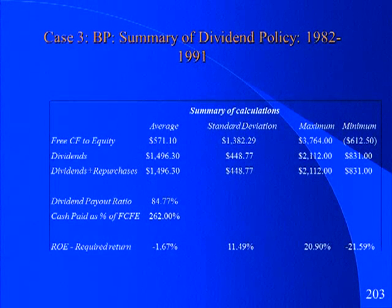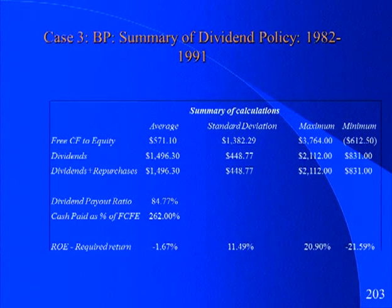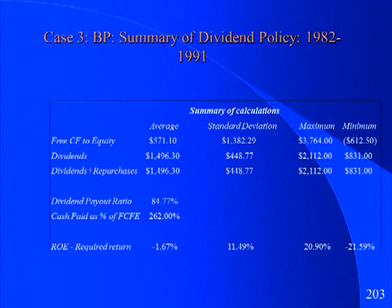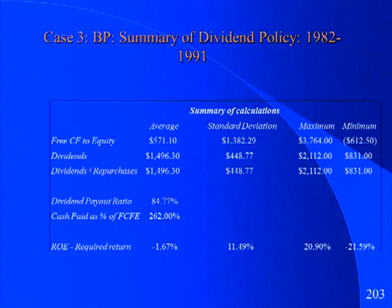Don't do rash things this week — rash things in the sense of abandoning a company you've been working with because you found a glitch you can't work through. I've had at least half a dozen panic emails overnight with people saying their company has negative book value of equity, asking if they need to change companies.